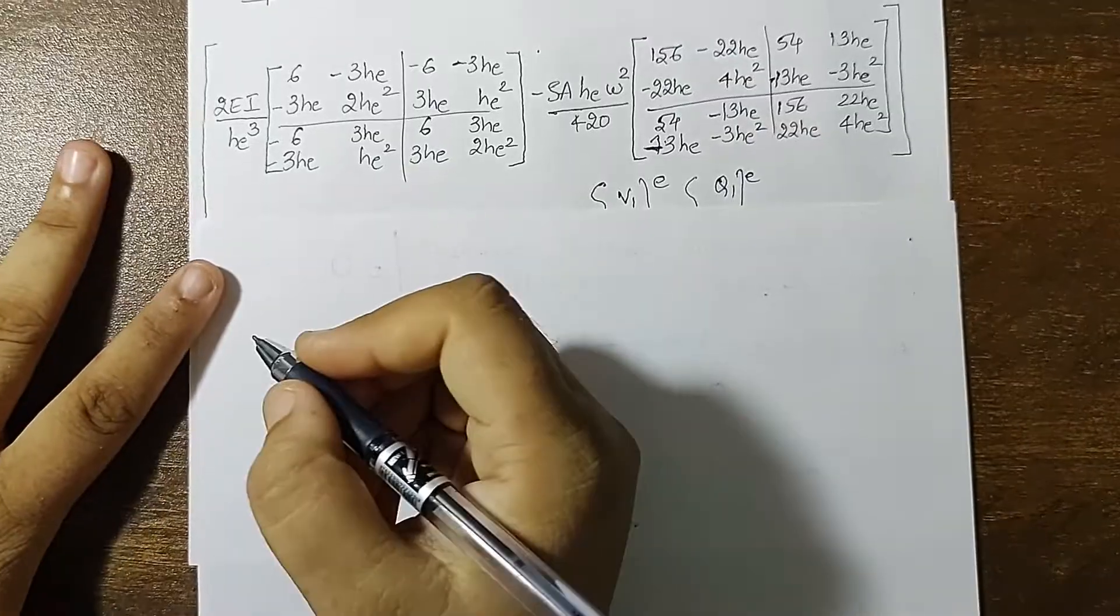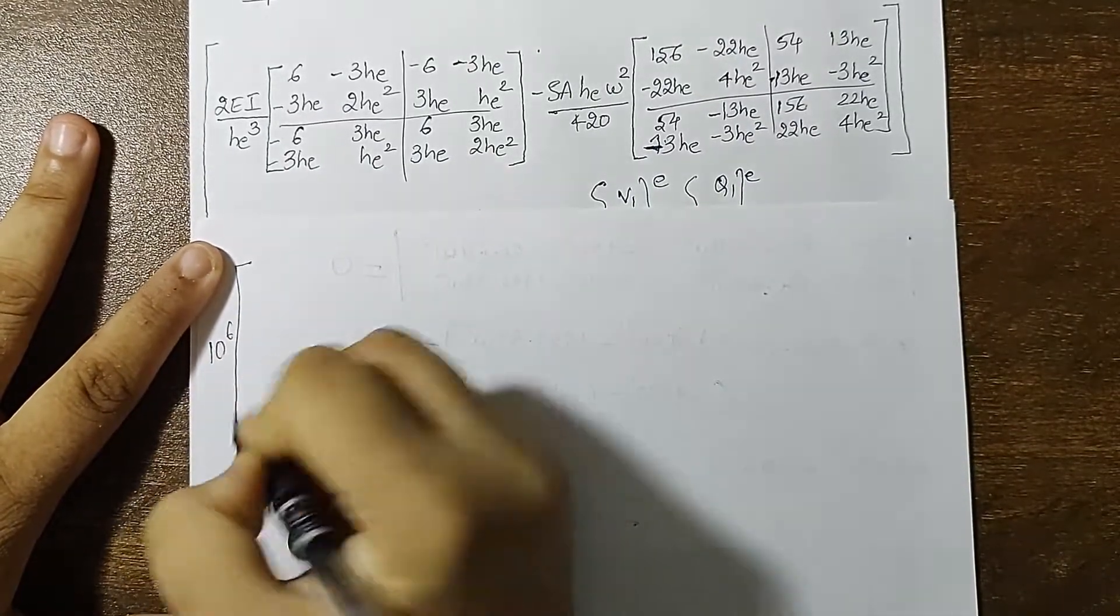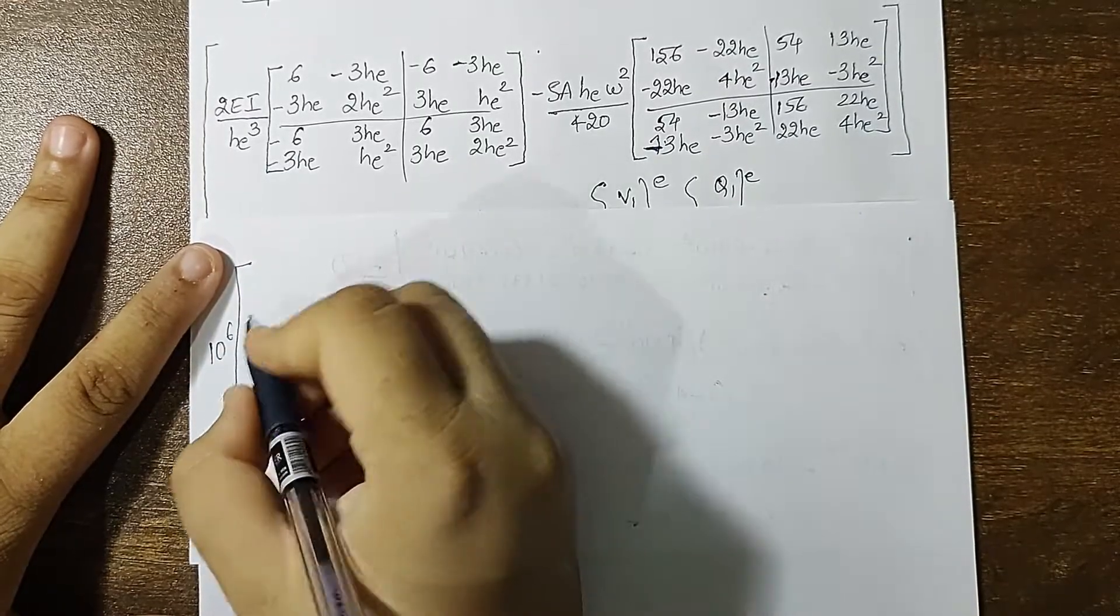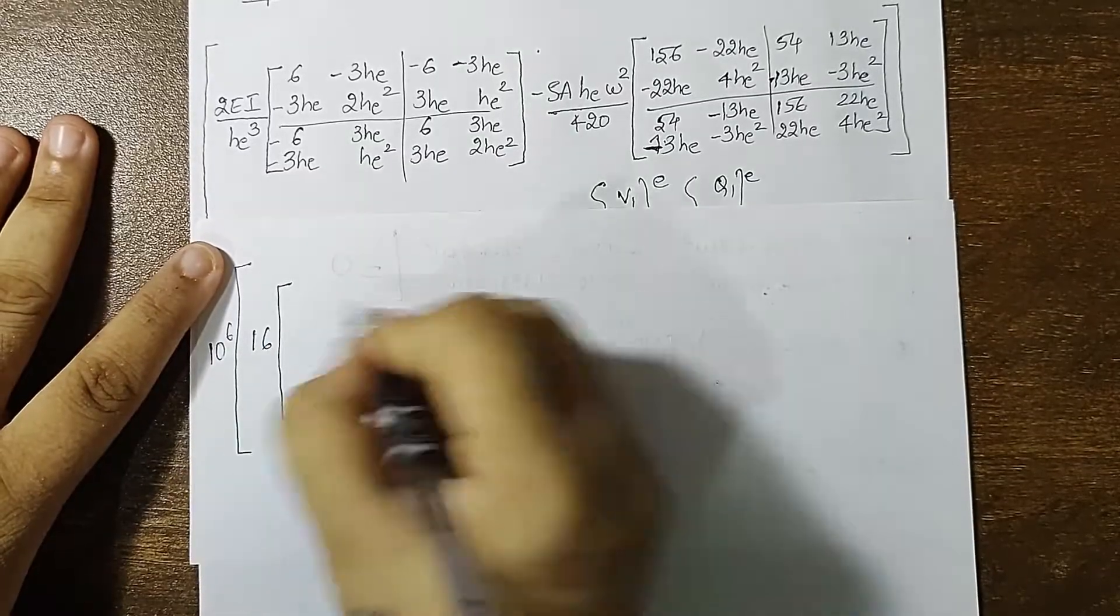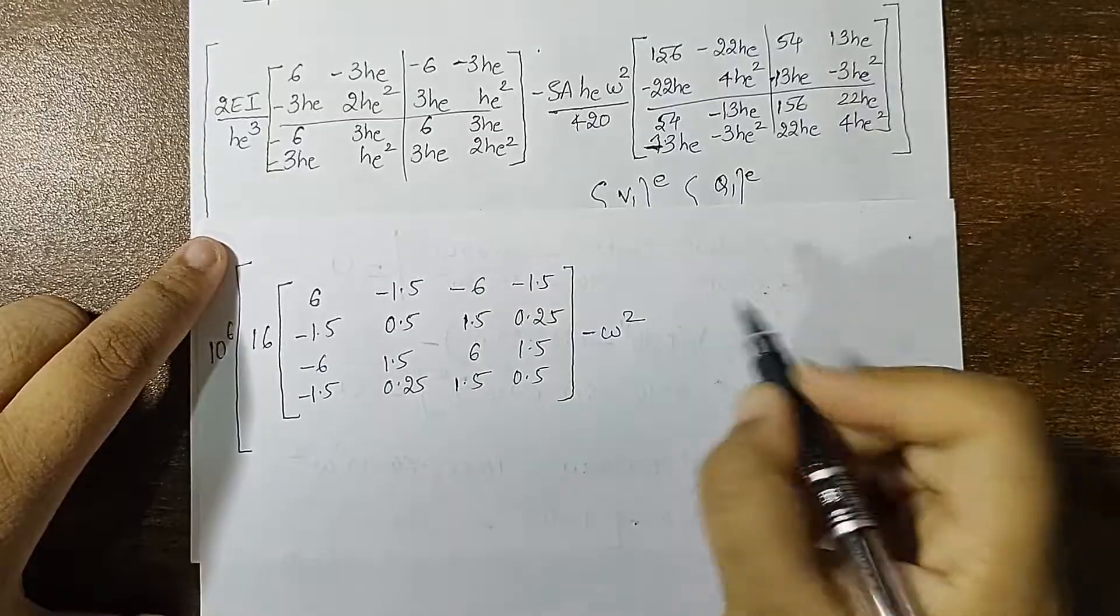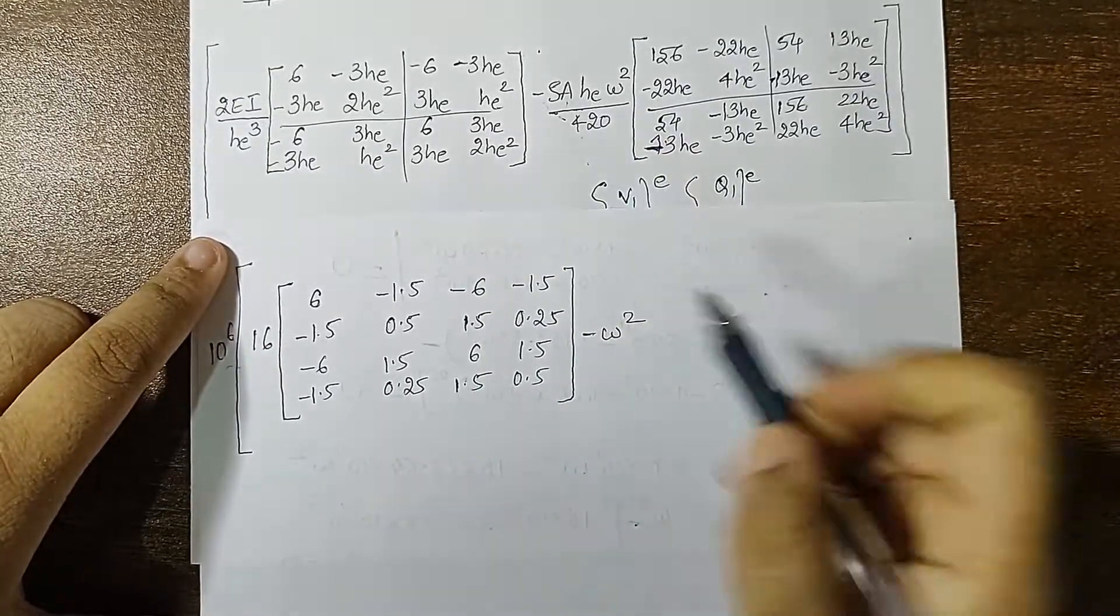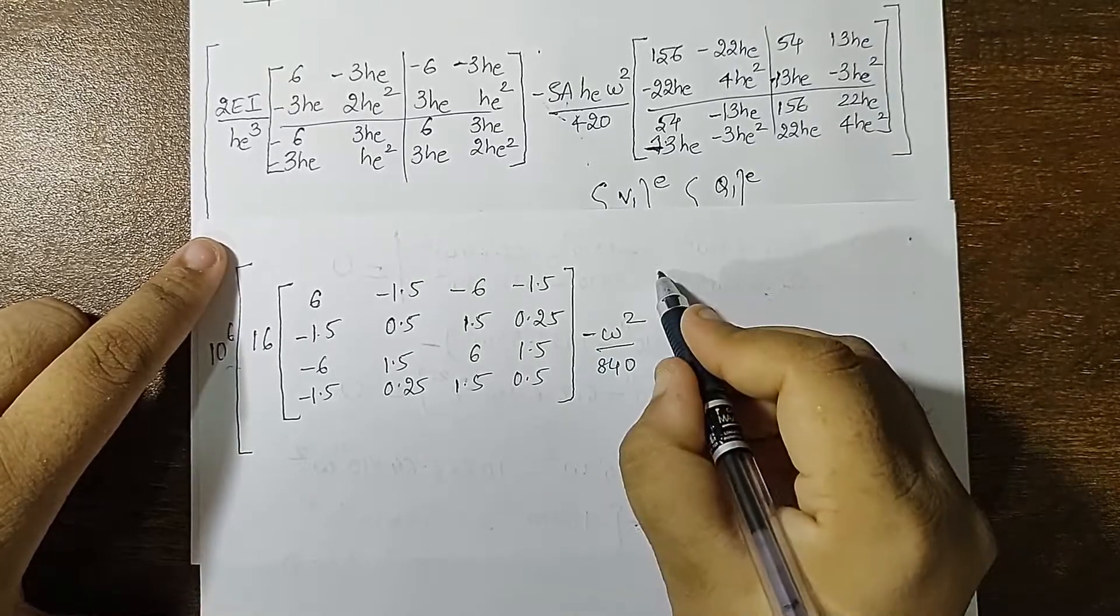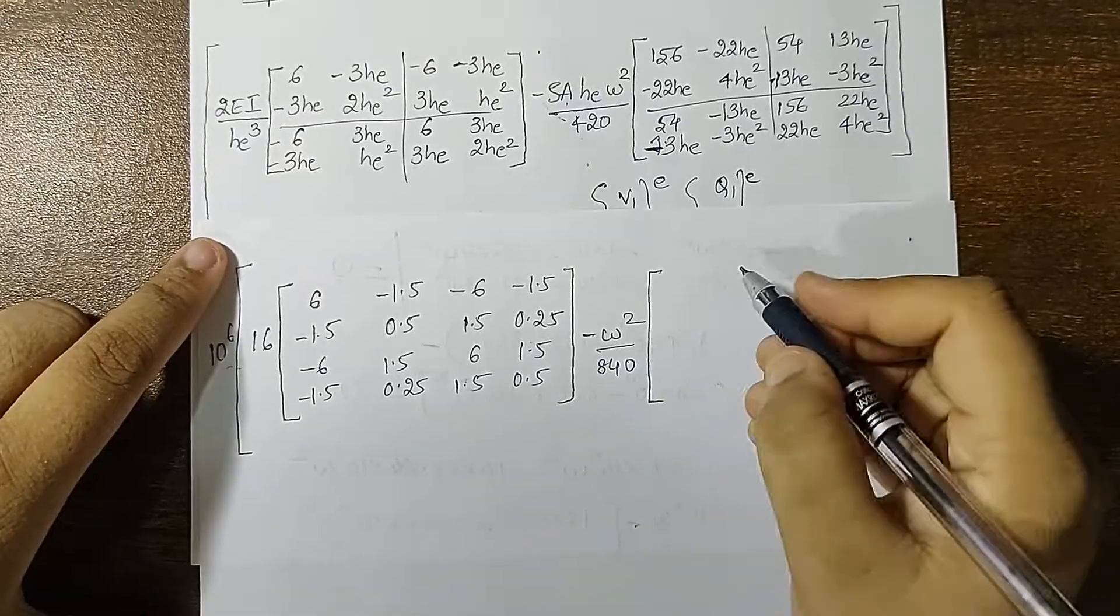I am going to substitute all these values in this equation. I first have 10 raised to 6 common from both terms. This is 2 upon HE squared, so when I solve it, I get 16. Then I will write the rest of the terms. Next I will have minus omega squared. This rho into A I have already taken out. So HE upon 420 is what remains, so here I will get 840. And then when I multiply HE with all the terms inside, I get.